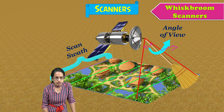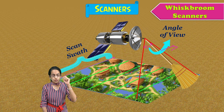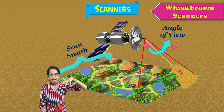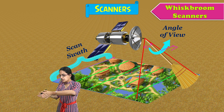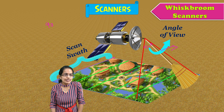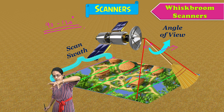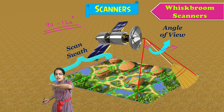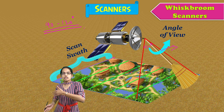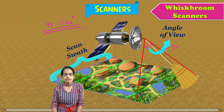The area which is being covered on the ground is known as the scan swath. This scanner is interesting because the mirrors are rotating and the field of view is around 90 to 120 degrees. Since the mirror moves, it covers a wider area — moving left to right, right to left — covering a huge area. These whisk broom scanners are also known as across track scanners.